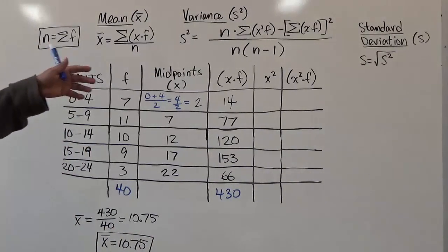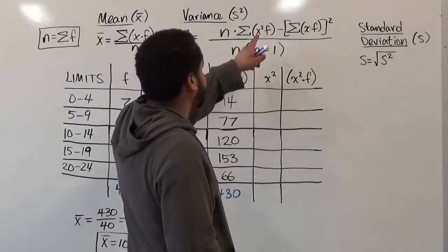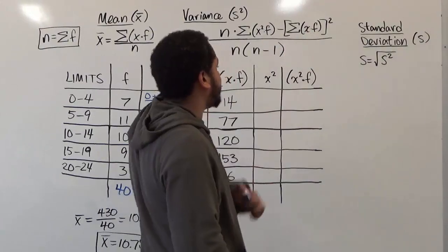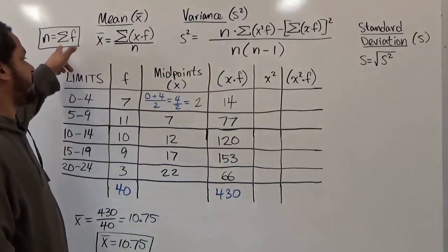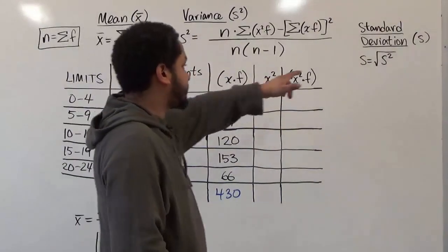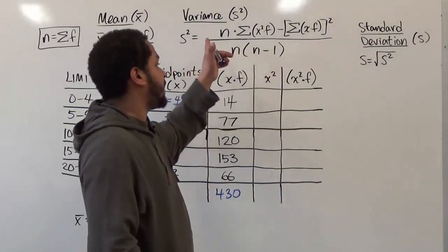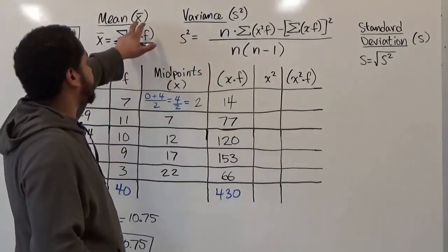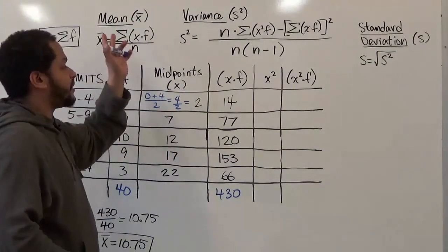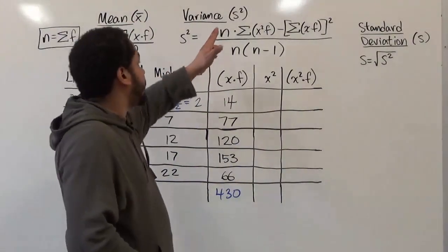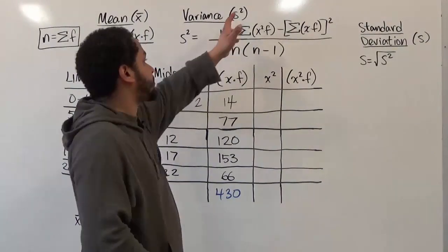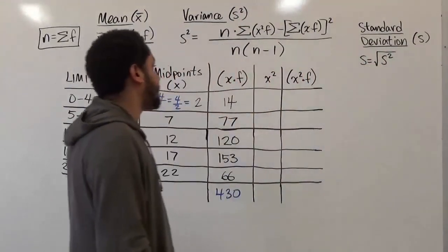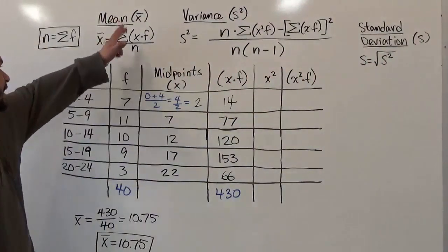All that's left is the variance and the standard deviation. To calculate the variance, we need the sum of the x² times f column, the sum of xf, and n. To get the standard deviation, we just take the square root of the variance. The mean value is x-bar because it's a sample mean. Our variance is s², because it's a sample variance, and our standard deviation is also a sample standard deviation.